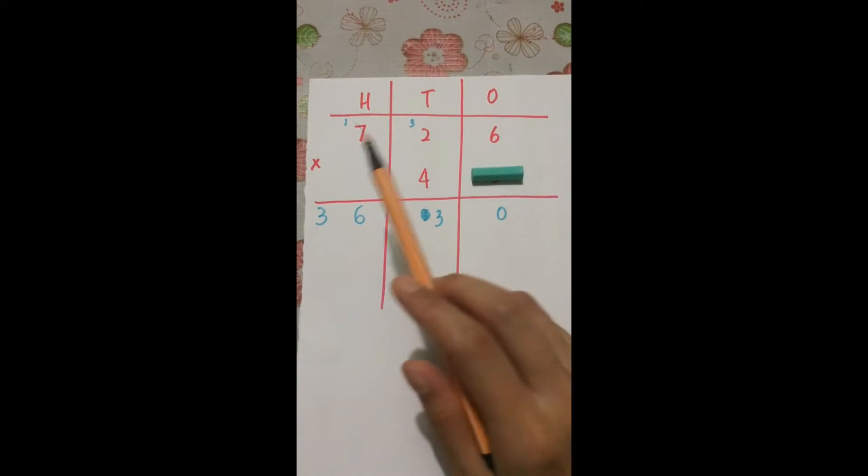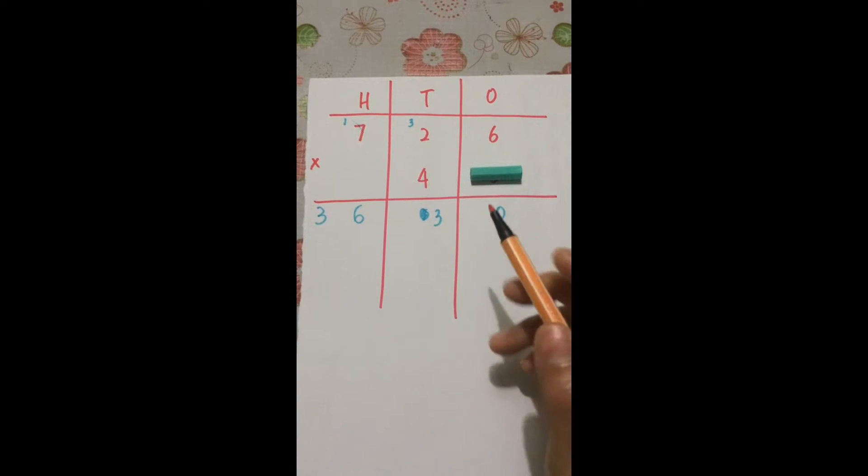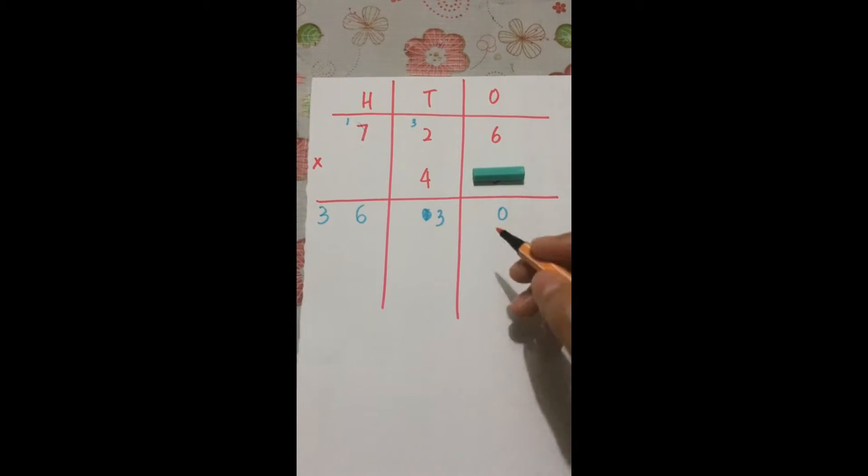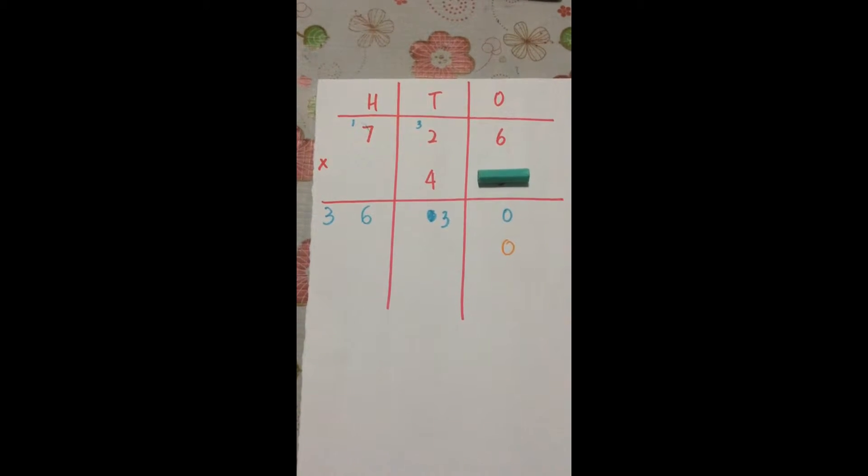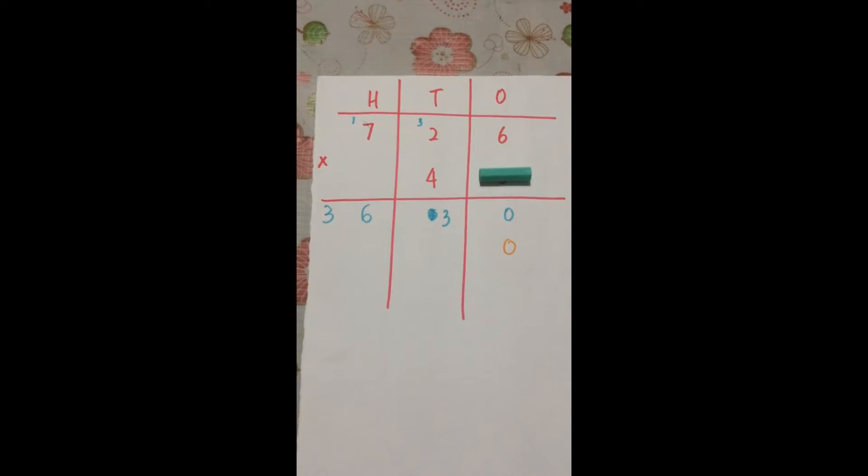726 times 4. Alright, remember, the very important step to remember is to add a 0 here before you begin. It's very important that you write the 0 here, otherwise you get the whole answer wrong.